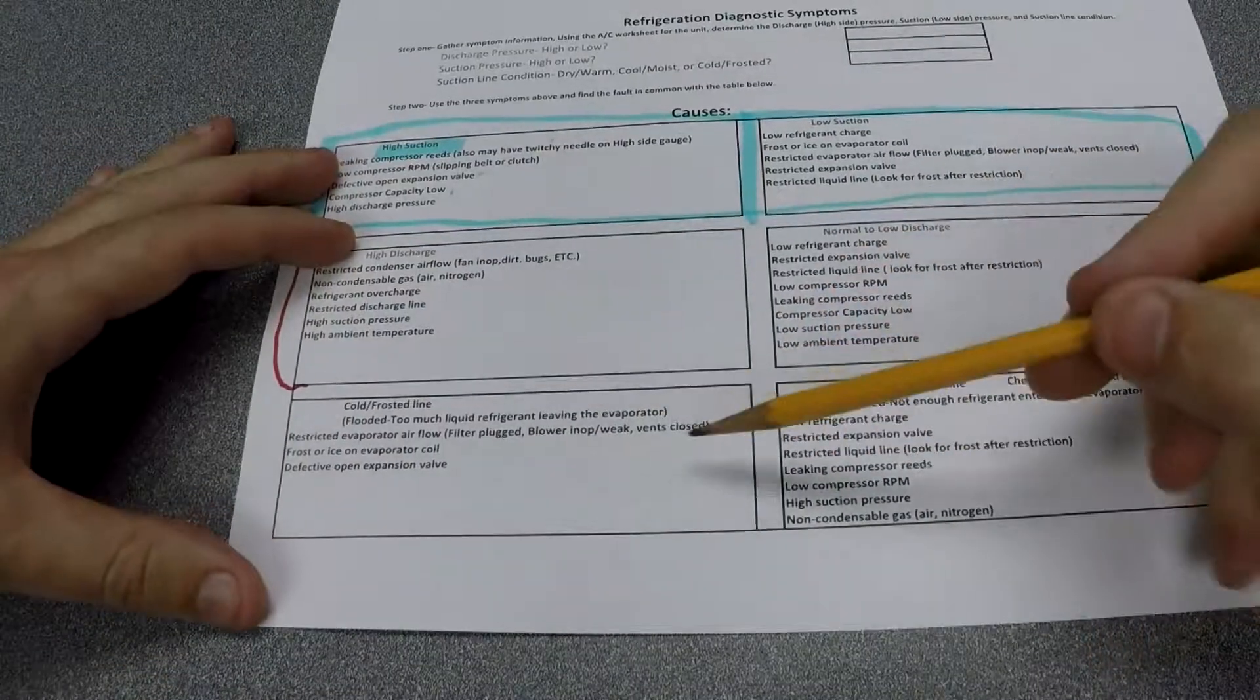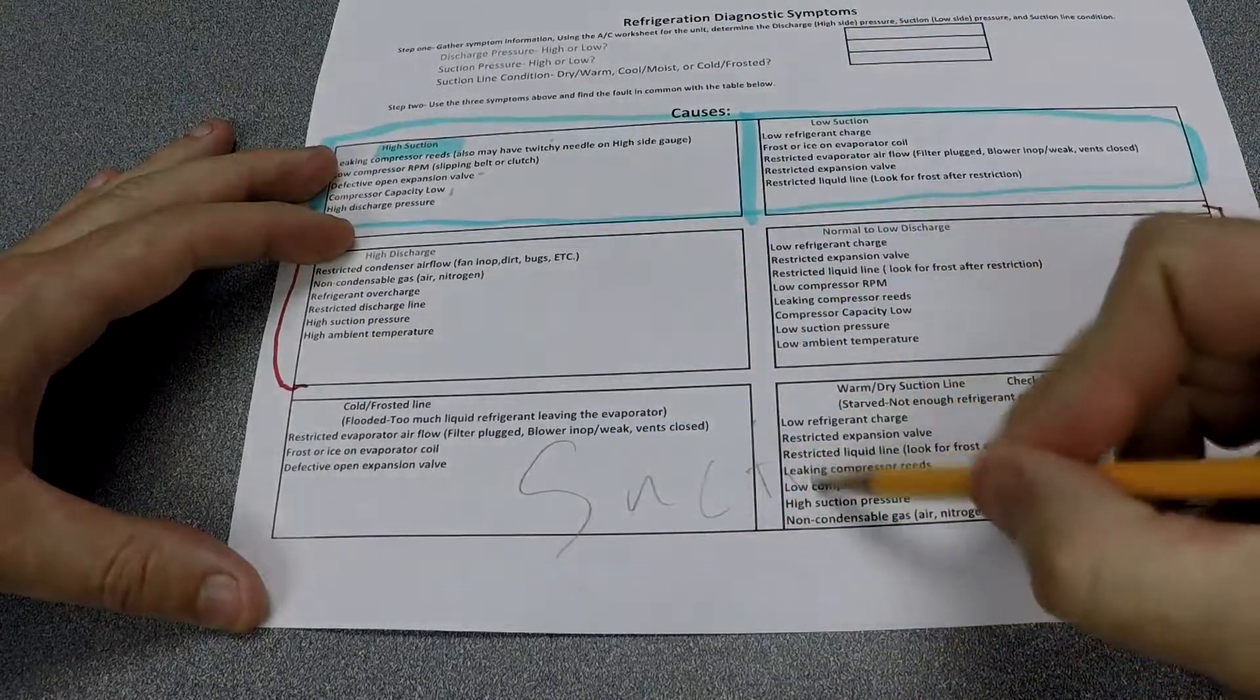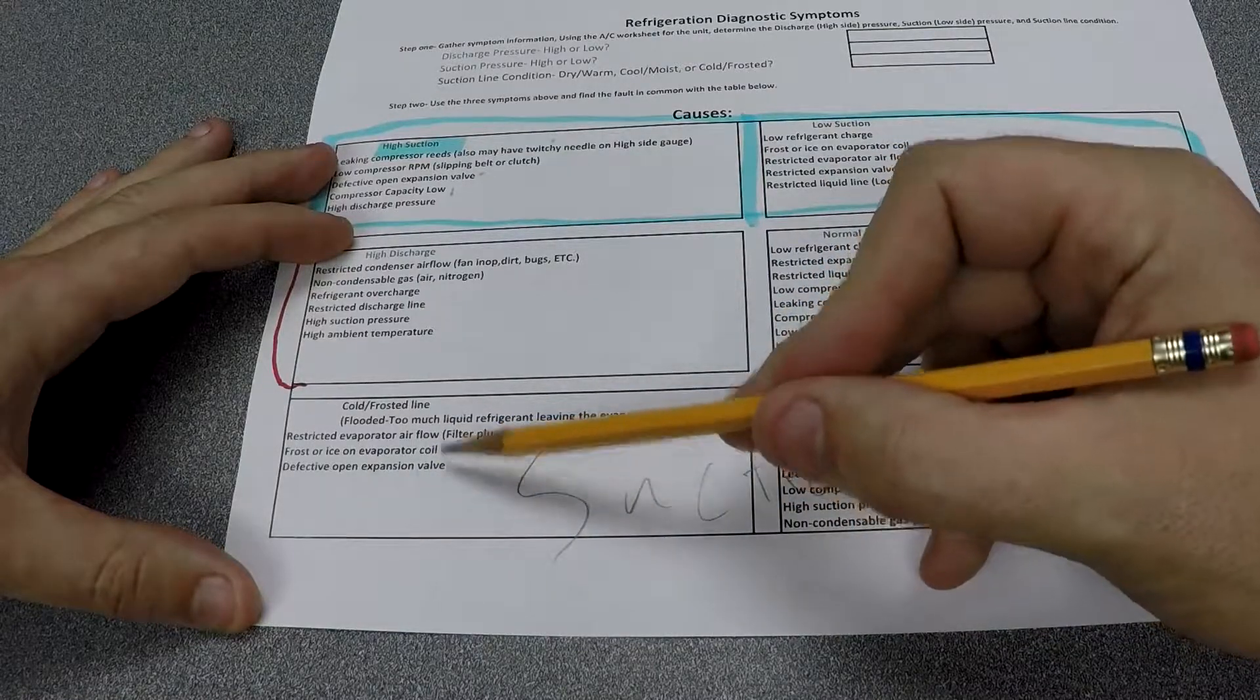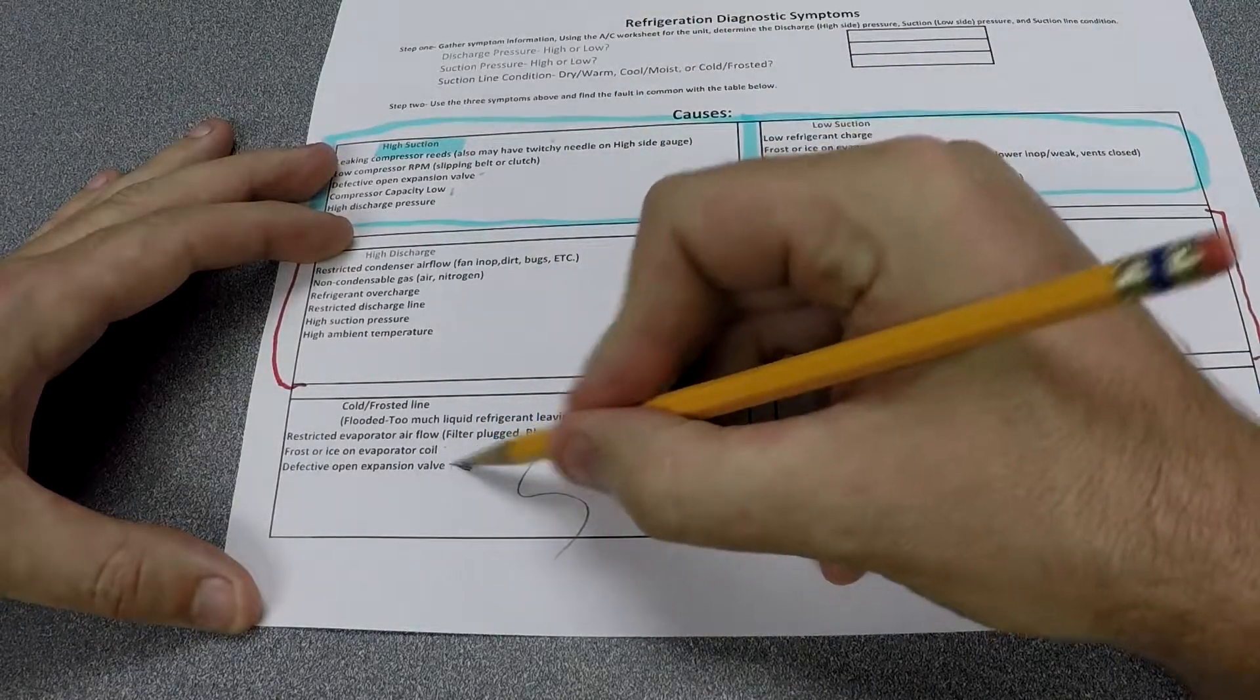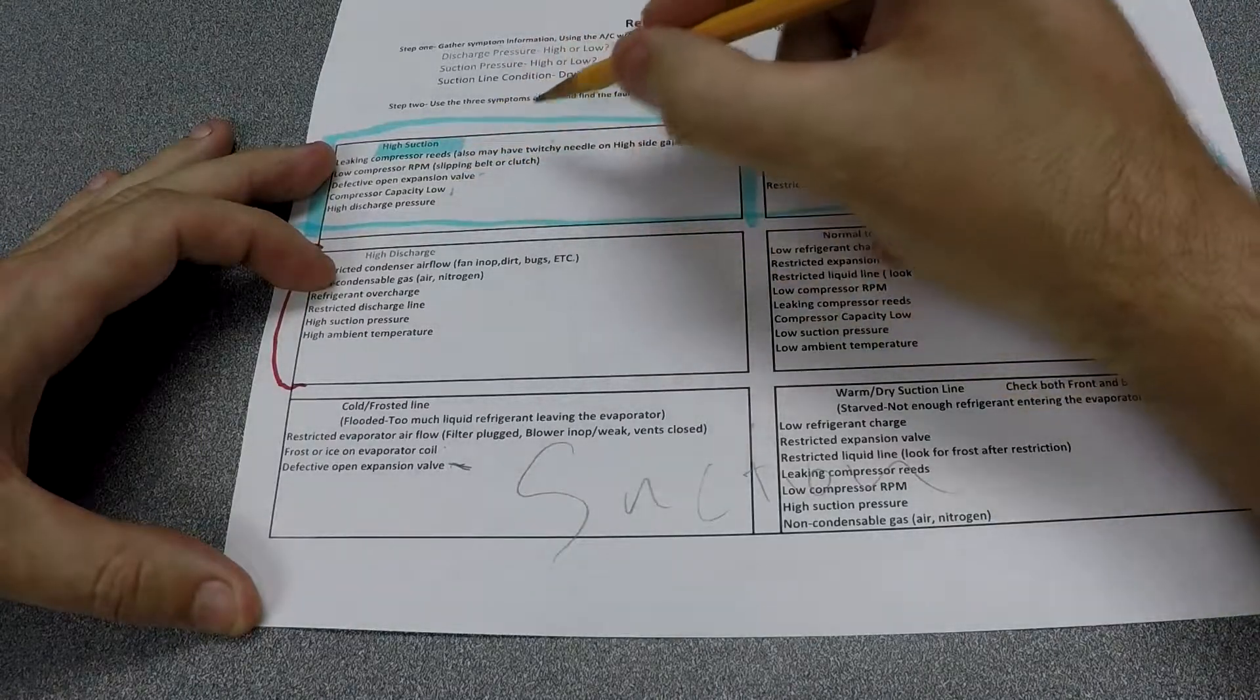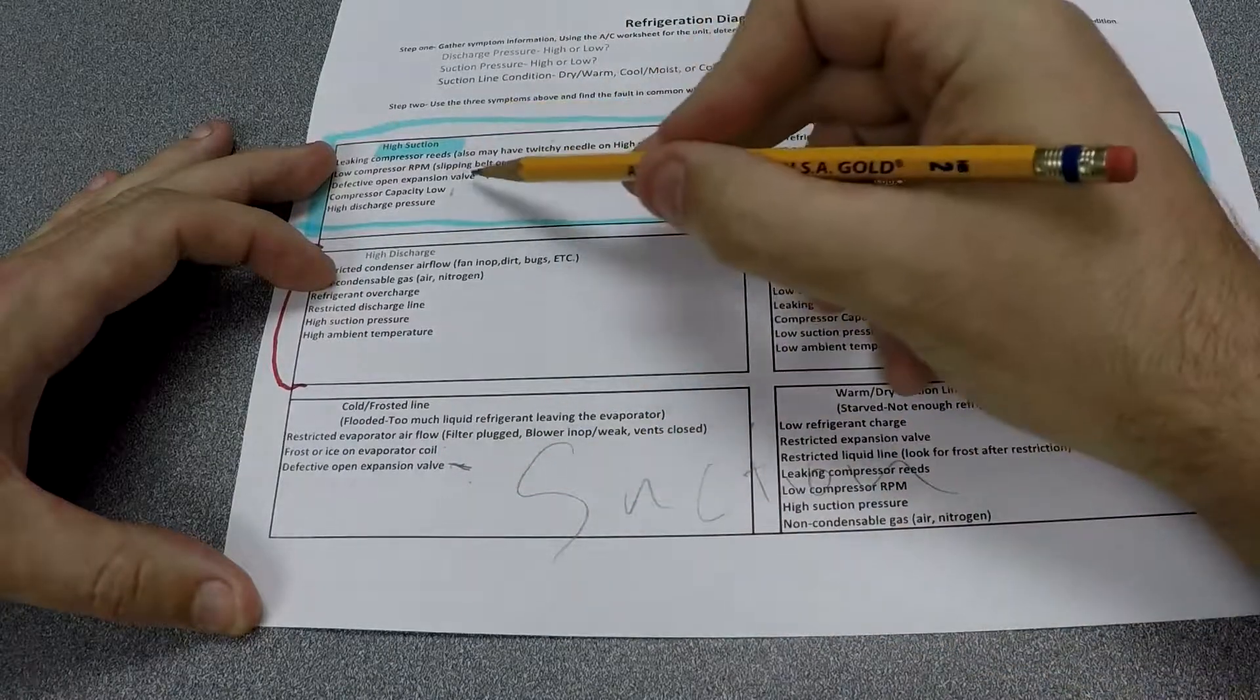Now down in this area here on the very bottom, remember this is the suction line. You look at the suction line if it's cold and frosted. There's a couple things it could be: restricted airflow on the evaporator, frost or ice on the coil, defective open expansion valve. So if I got a cold frosted line and a stuck open expansion valve, that's right here under high suction.